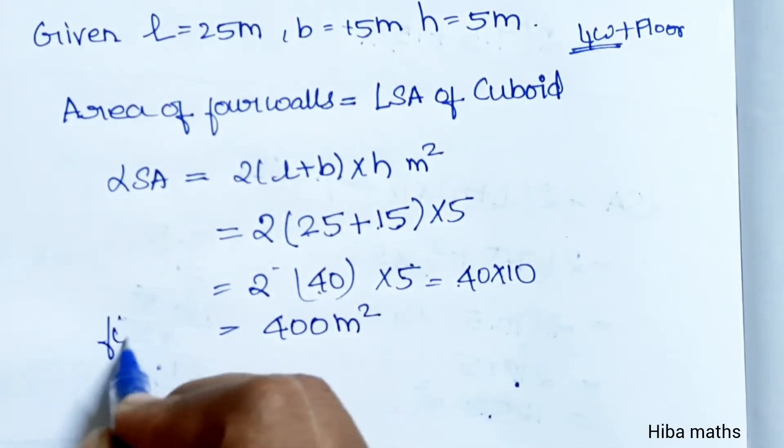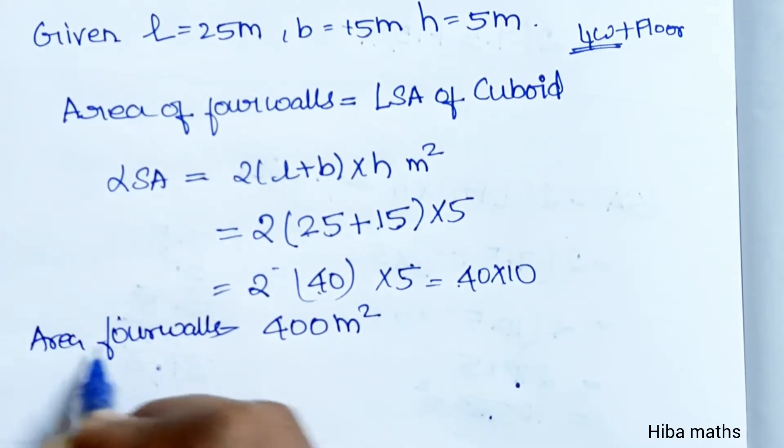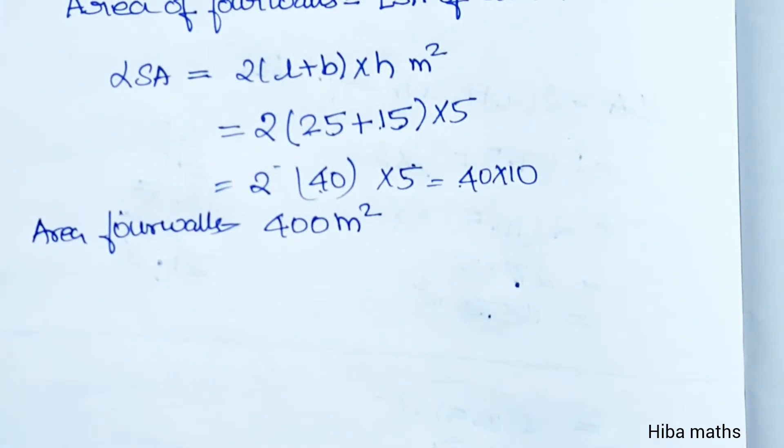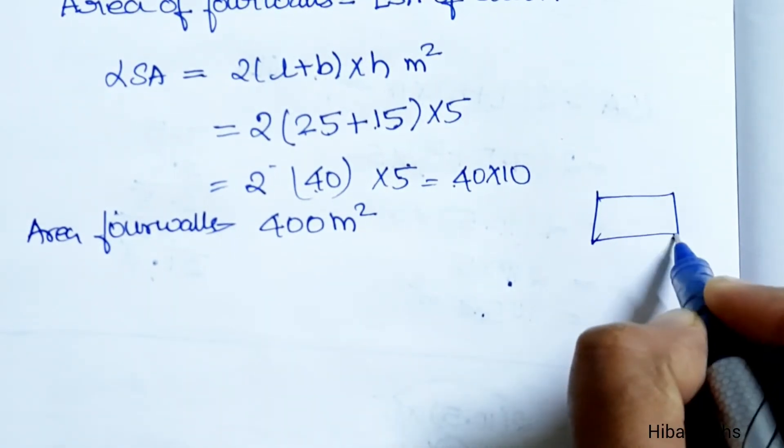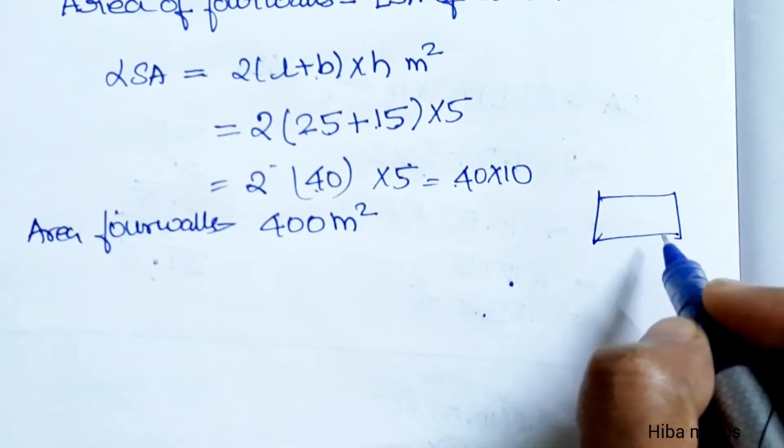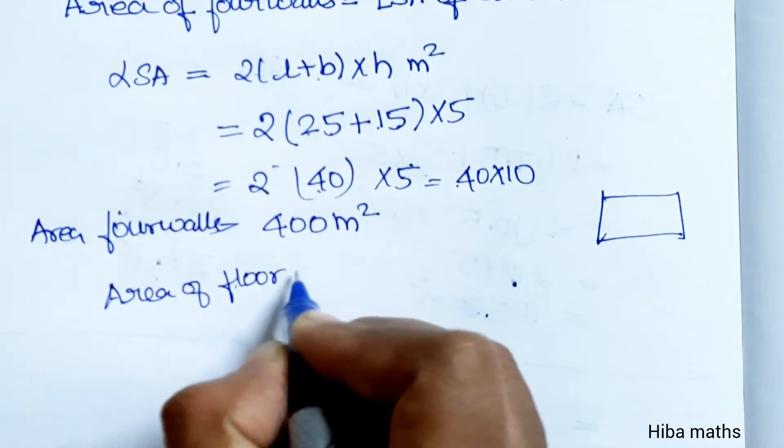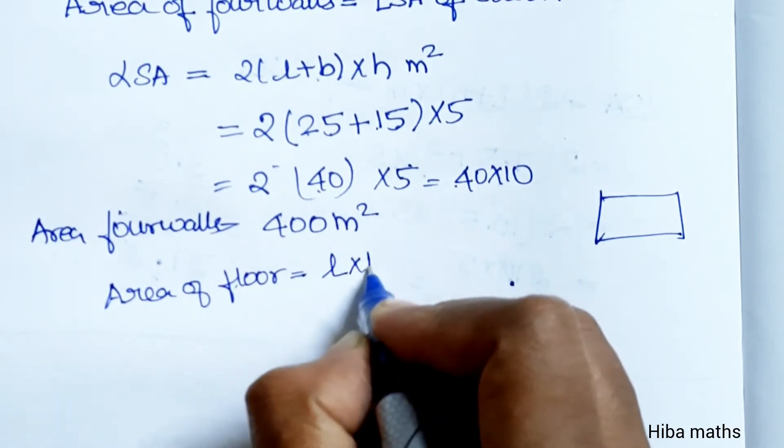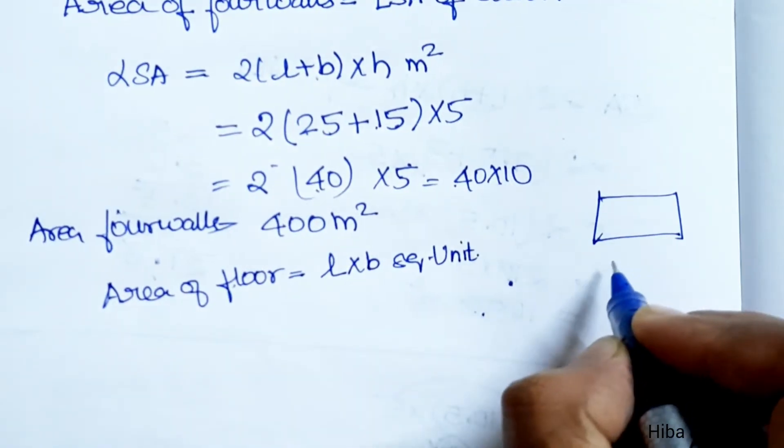The 4 walls area is 400 m². Now for the area of floor - the floor is a rectangle, so area of floor is length × breadth in square units.